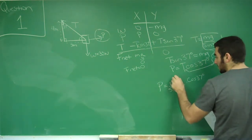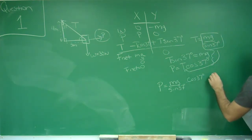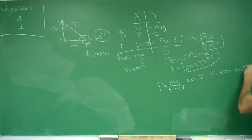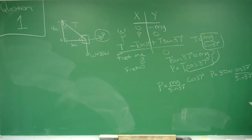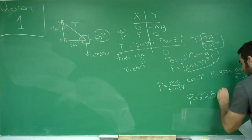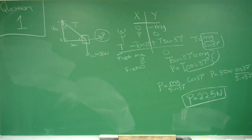We now have all parameters to solve for the pulling force. P equals mg over sine of 37 degrees times cosine of 37 degrees. Mass times gravity is the weight of the object, which is 30 newtons. So P equals 30 newtons times cosine of 37 degrees over sine of 37 degrees. Plugging this into the calculator, the pulling force equals 22.5 newtons. You may get 22.6 newtons if you use 37 degrees; using 36.8 degrees gives exactly 22.5. The answer choice for question number one is choice number one on the practice exam: 22.5 newtons.